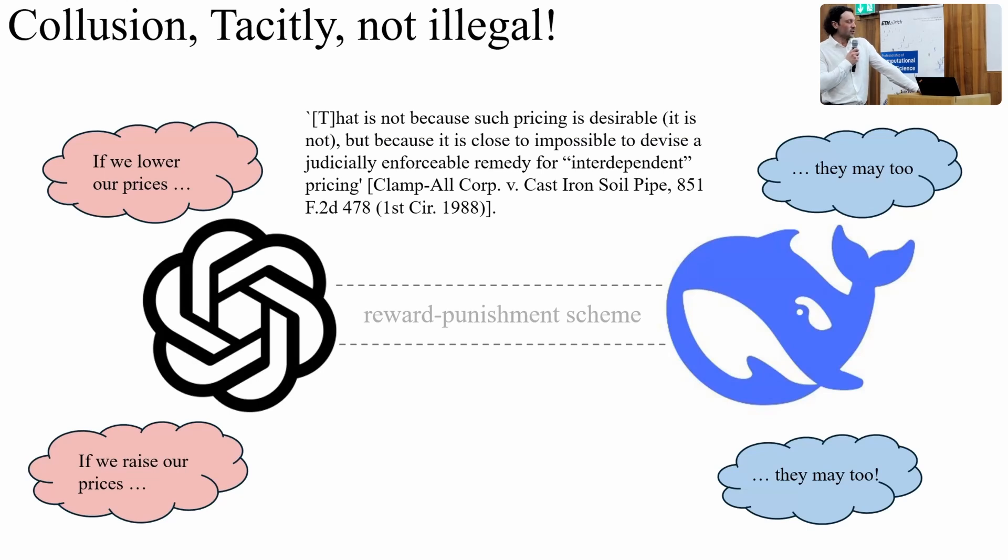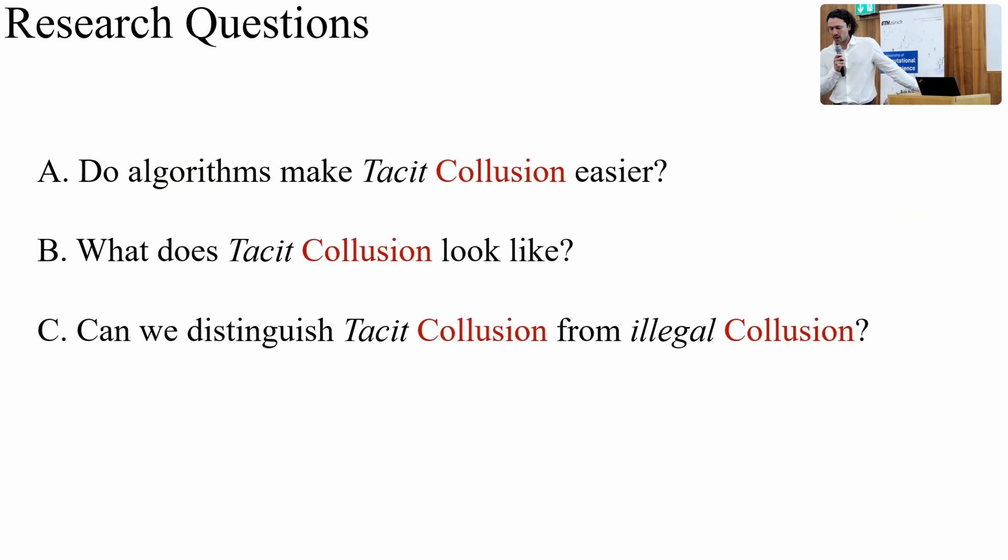So the question when it comes to algorithmic pricing is, do algorithms make this kind of tacit collusion much easier? Does it become much easier to achieve this kind of non-communicative agreement with another party which leads to higher prices? Will we see higher prices in a market where we have a lot of algorithms? And then what does this kind of collusion look like? If we are to see more of it, what does it look like? And a third question is, can we distinguish it? Can we tell just by looking at a market whether the kind of collusion that we are seeing is one where there was or there wasn't communication? Can we distinguish the illegal kind from the legal kind?